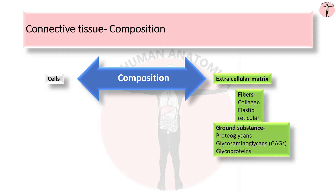The ground substance or amorphous material is a complex of anionic hydrophilic proteoglycans, glycosaminoglycans which are usually called GAGs, and multi-adhesive glycoproteins like laminin and fibronectin.